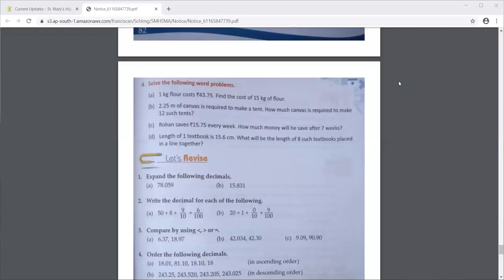So again 2.25 for one tent, so you will keep adding this number 12 times to get the total canvas that is required. But instead of adding like I just told you, you don't have to add, you will multiply by 12.